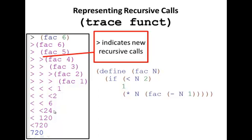Here I have FAC on the right, and when I call FAC with six, it shows each of the recursive calls that get made, and for each of those recursive calls, it shows the value that gets returned by each of those.